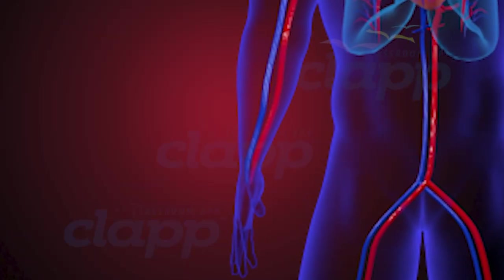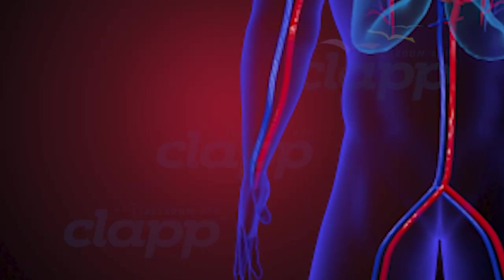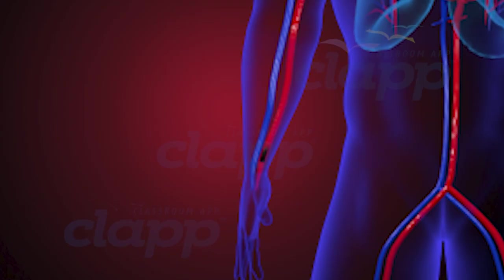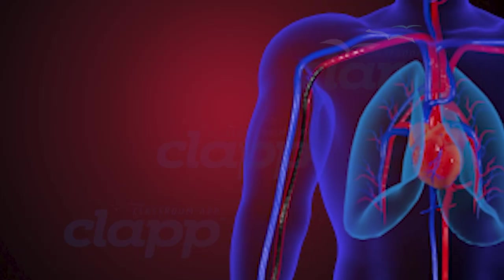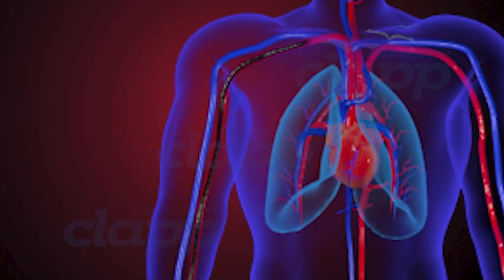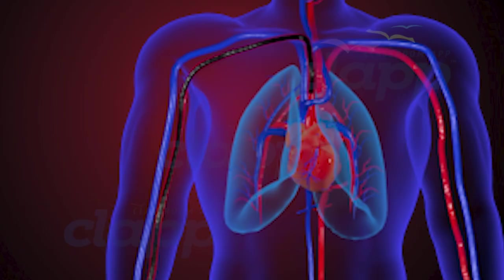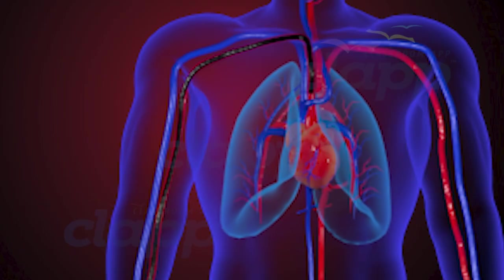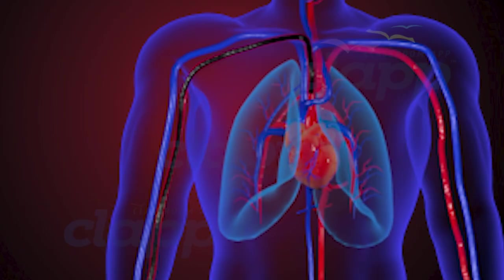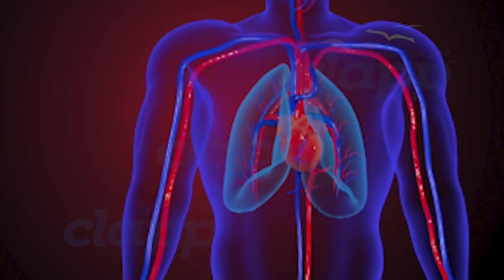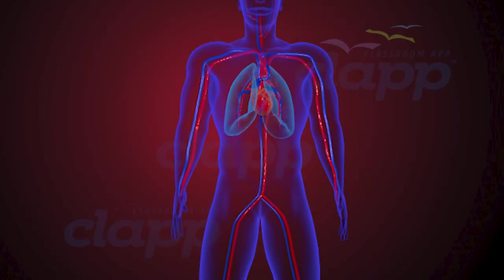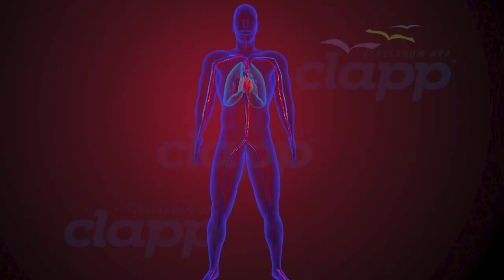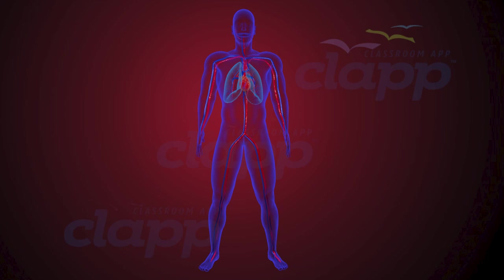Now let's explore how angioplasty works. Angioplasty begins with the careful insertion of a catheter — a slender tube — into the bloodstream. This catheter becomes the vehicle through which medical professionals navigate the arterial maze to treat blockages. The journey starts with identifying the optimal entry point for the catheter, based on factors such as the location of the blockage, accessibility, and the overall condition of the patient's arteries.